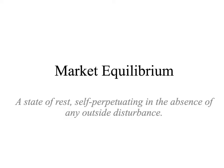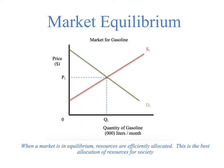In the marketplace, that point is established where the supply curve and the demand curve meet. You would say that the market is in equilibrium at P1, Q1, because the amount of gasoline that is supplied in the marketplace is equal to the demand of gasoline in the marketplace. This point right here is the optimal point for the allocation of resources in the marketplace. When a market is in equilibrium, resources are efficiently allocated, and this is the best allocation of resources for society.